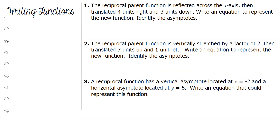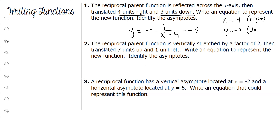Example 1: it reflects across the x-axis, so there's a negative in front. It went four units to the right, so we write x minus 4 in the denominator. It went three units down, so minus 3 outside. The vertical asymptote is x equals 4 and the horizontal asymptote is y equals negative 3. If you draw a picture, it went right four and down three — this is your asymptote, and because it reflected, the graph looks like this.